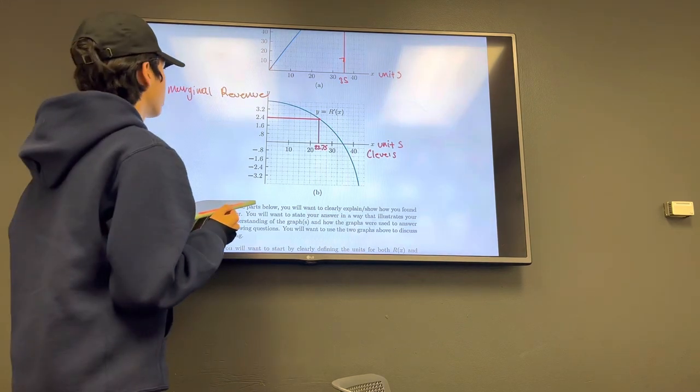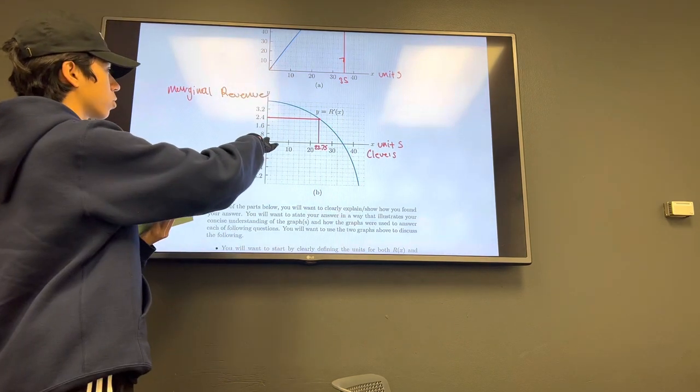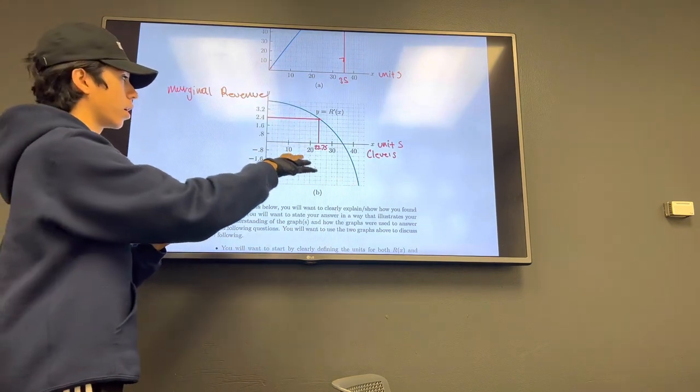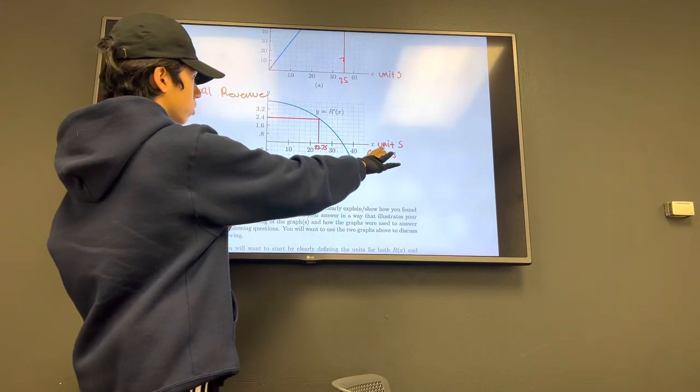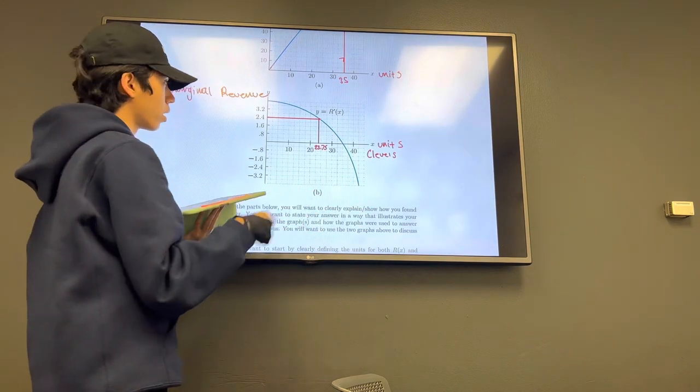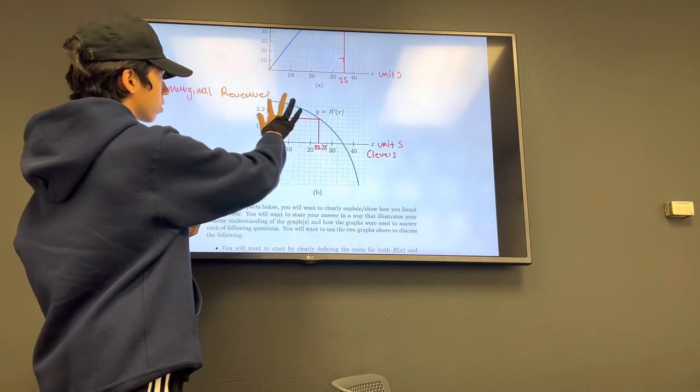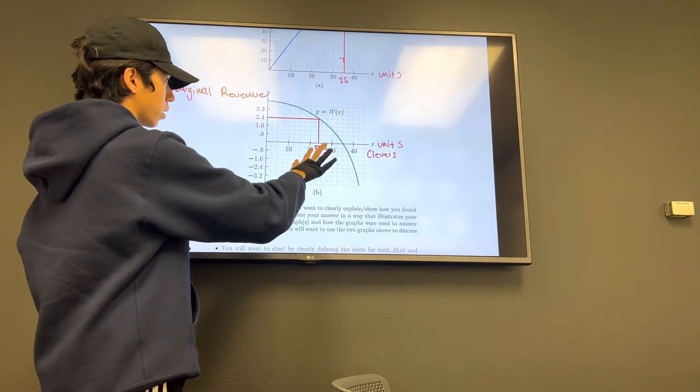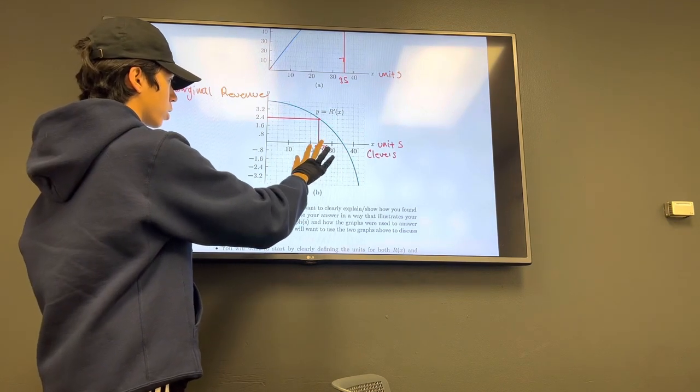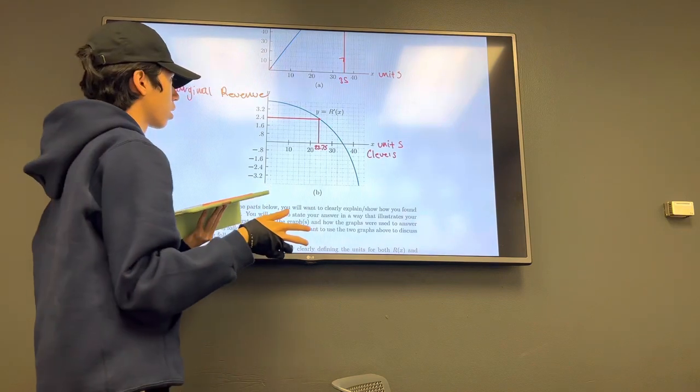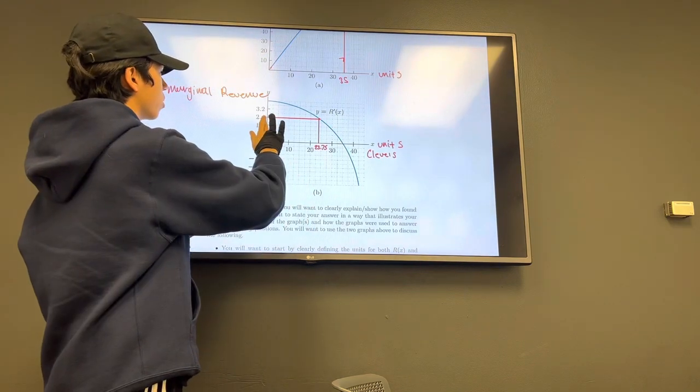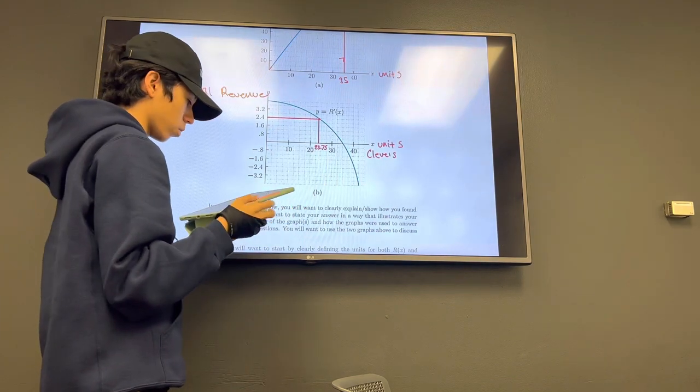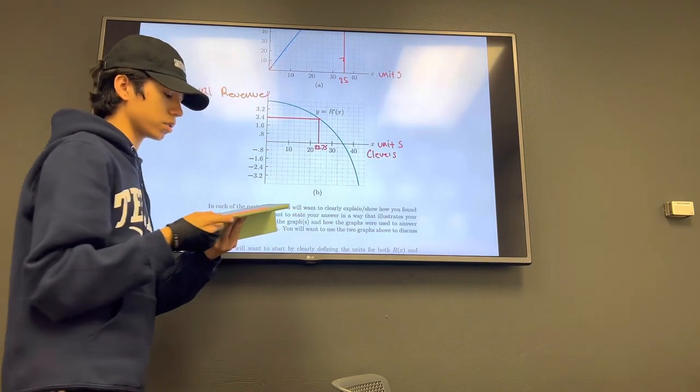Here, our y-axis is marginal revenue because this is the derivative of the first graph. The x represents the units for the levels of production. If we look across this blue line, at a level of production of 23.75 units, we have the marginal revenue of 2.4, or $2,400, which would satisfy the answer for this question.